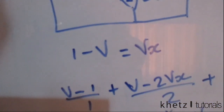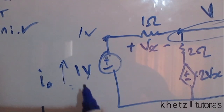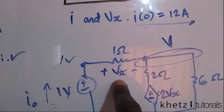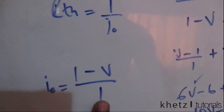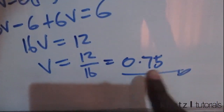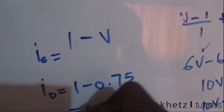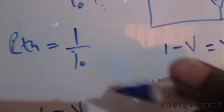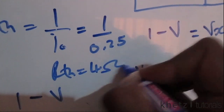With v = 0.75, we can find io. Looking at the circuit, io equals (1 minus v)/1, which equals 1 minus v. So io equals 1 minus 0.75, which is 0.25 amperes. Substituting into Rth = 1/io gives Rth = 1/0.25 = 4 ohms.